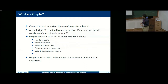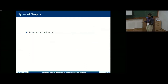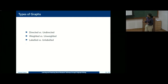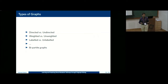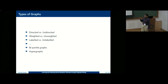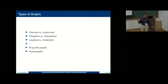Graphs are classified elaborately, which influences the choice of algorithms you employ. You have directed or undirected graphs, weighted versus unweighted graphs, and labeled versus unlabeled graphs — that last distinction is particularly important in the context of today's talk. There are also bipartite graphs, which I'll discuss tomorrow. Hypergraphs are graphs where a hyperedge can connect any number of nodes, not just two.